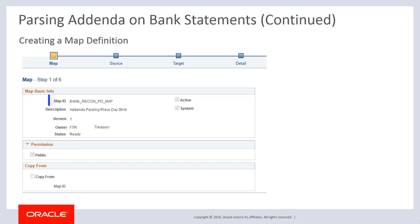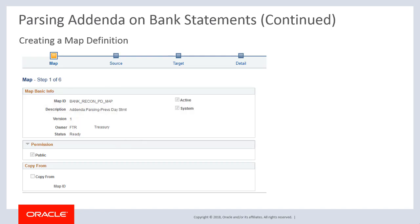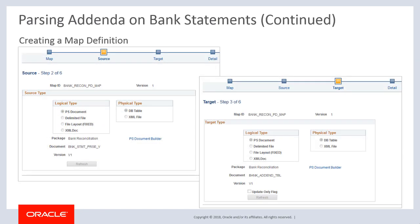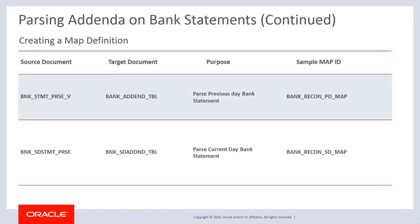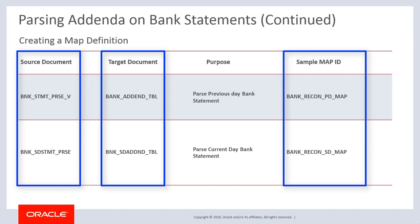Begin by copying the delivered map definition, bank recon pd map, on the map page. This map definition includes mapping between the source record and the target record, bank addenda table. All map definitions for addenda parsing must have the active option selected and owner set to FTR, which represents treasury. Next, specify source and target documents using the source and target pages. PeopleSoft provides source documents and target documents as well as sample map definitions for parsing addenda on previous day and current day bank statements.